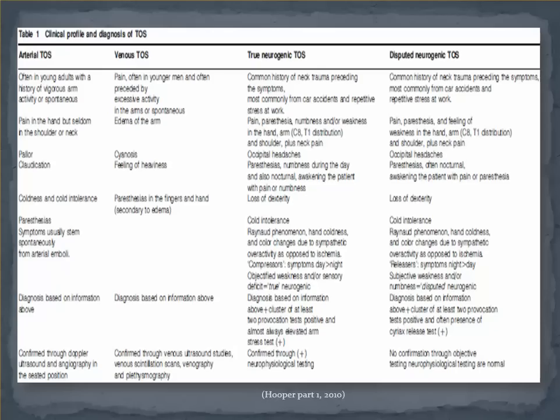Under the true and symptomatic neurologic columns, you can also see the term compressors and releasers. Distinguishing between the two may help us determine the best treatment approaches. In general, compressors tend to have more symptoms throughout the day with activities that compress the neurovascular structures, and releasers tend to have more symptoms at night as paresthesias are often brought on as compression is taken off of the neurovascular structures, which often disturbs sleep.